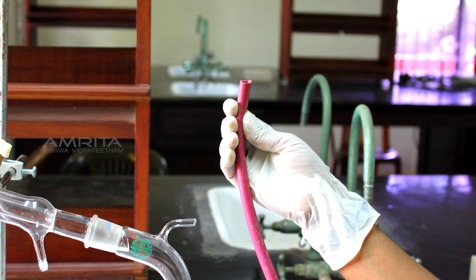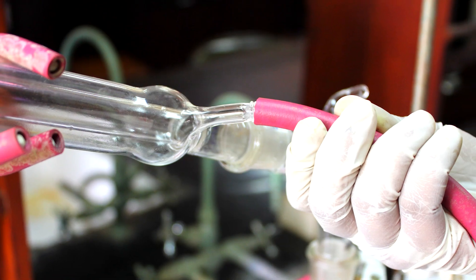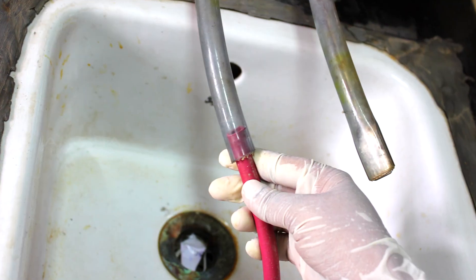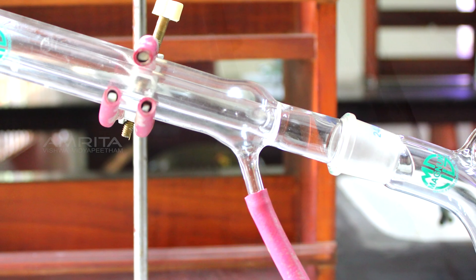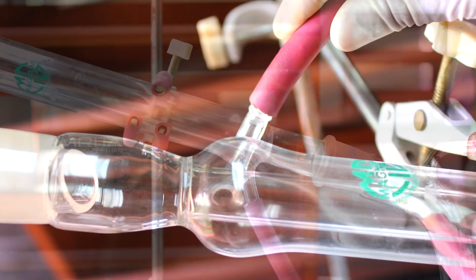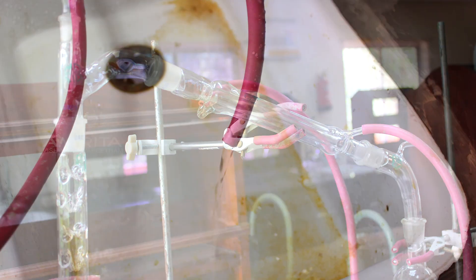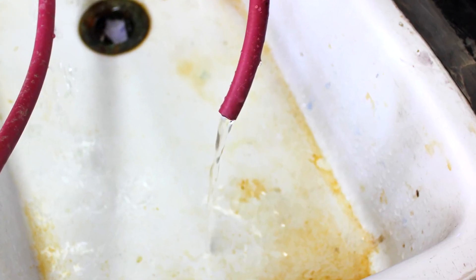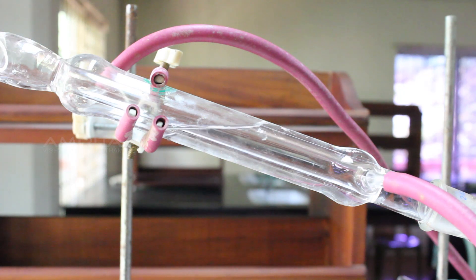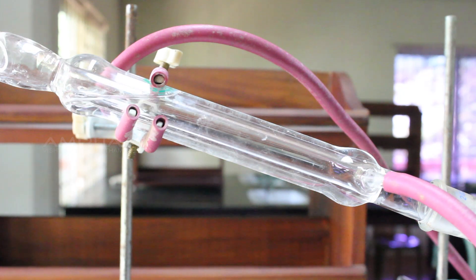Now, connect a rubber tube between the inlet of the condenser and the tap to allow the cold water to enter. Connect another rubber tube to the outlet of the condenser to pour the hot water from the condenser to the sink. Open the tap so that water flows through the tube and fills the condenser and then comes out through the outlet.